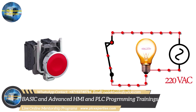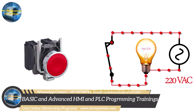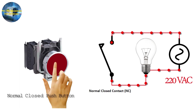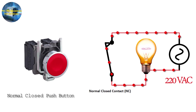Now let's see how a normal close pushbutton works — it's exactly opposite to the normal open pushbutton. The normal close pushbutton has NC contacts. Let's put it in series with a bulb and a power source. The bulb turns on because of the NC contact. If we press the pushbutton the bulb turns off as the NC contact opens and cuts the current path. If we release the pushbutton the NC contact closes again and current flows and the bulb turns on.